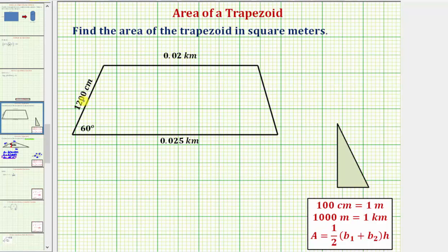Let's first convert 1,200 centimeters to meters. We may recognize that because 100 centimeters is equal to one meter, 1,200 centimeters would be equal to 12 meters. But just in case, let's show the conversion by multiplying by a unit fraction.